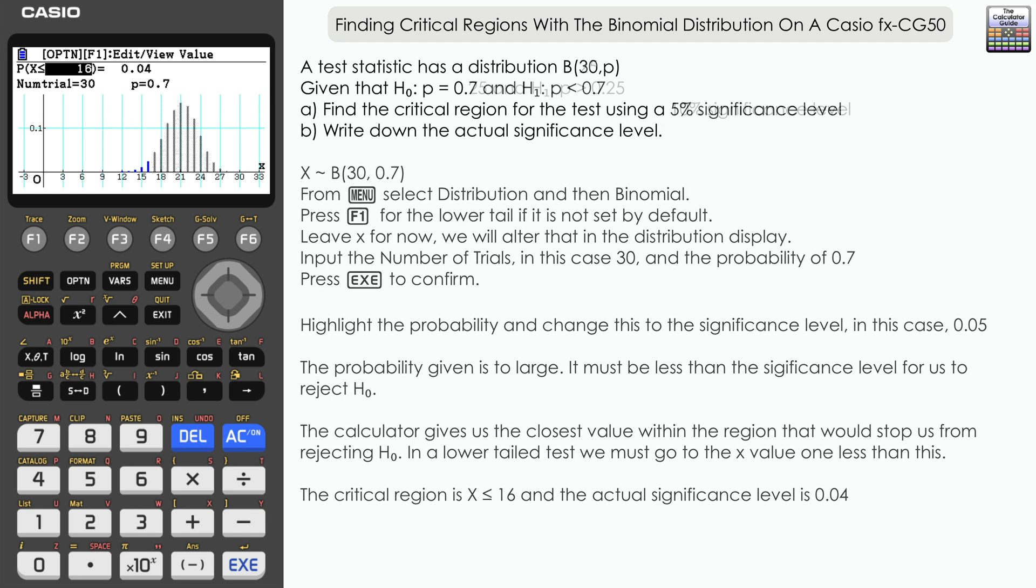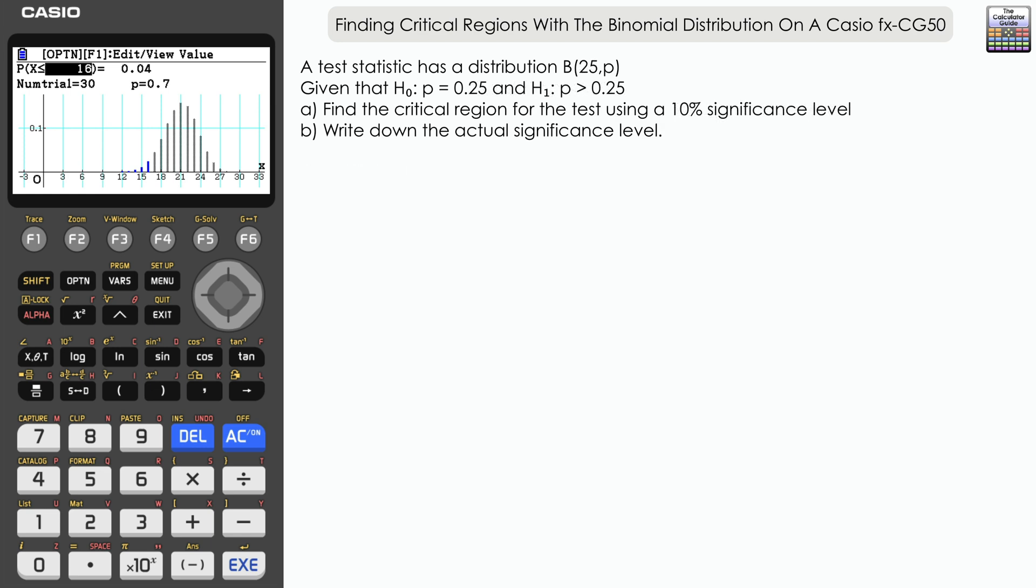The second question now, and this is going to be an upper tail test. We have a test statistic with distribution binomial, an n of 25 and a p of p. We're given that H₀: p = 0.25 and H₁: p > 0.25.